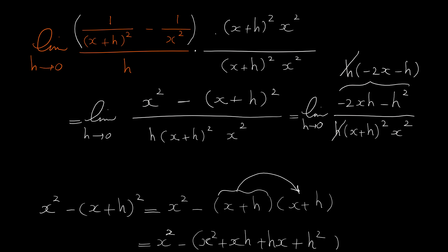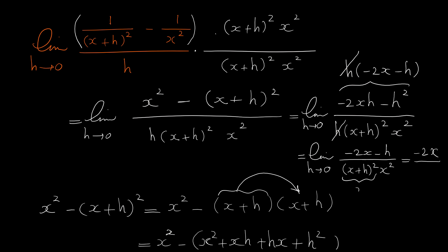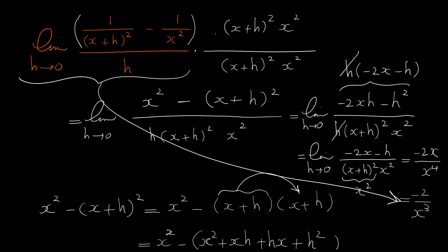What remains in the numerator is (−2x − h), and in the denominator (x + h)² times x², as h approaches 0. Plugging in 0 for h: numerator becomes −2x, and in the denominator (x + 0)² = x², times another x², giving x⁴. So this limit equals −2x over x⁴, which simplifies to negative 2 over x³ after canceling one x from top and bottom.